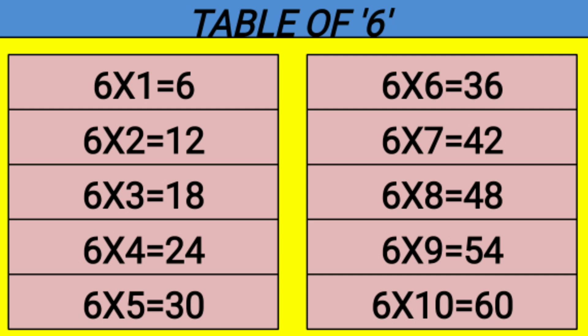Table of 6. 6 1s are 6, 6 2s are 12, 6 3s are 18, 6 4s are 24, 6 5s are 30.